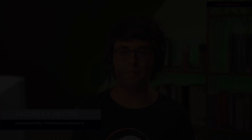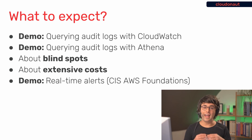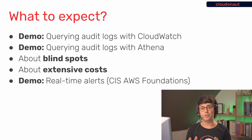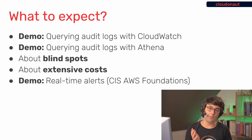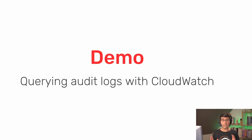Did you enable CloudTrail for your AWS accounts already? You should — not only for being able to answer future questions about security incidents, but also to answer day-to-day questions of an account administrator. I will start with two demos: first, how to analyze CloudTrail logs with CloudWatch Insights, and then a more advanced analysis using Athena. We'll also cover blind spots, extensive costs when configured incorrectly, and real-time alerts based on the CIS AWS Foundations Security Standard.